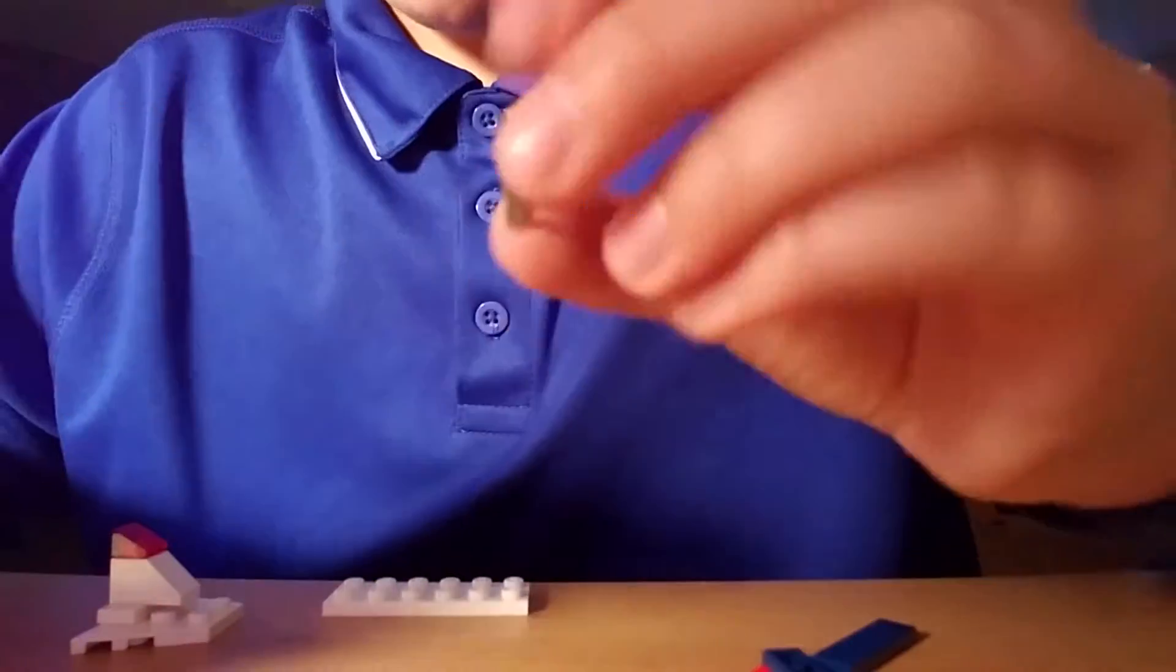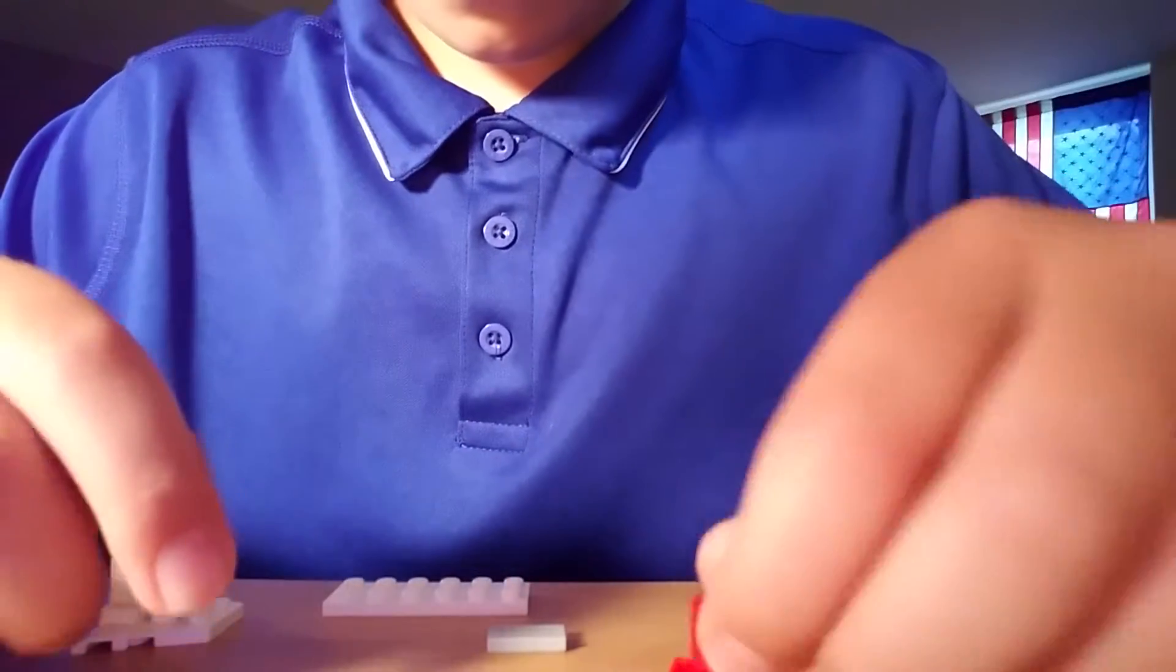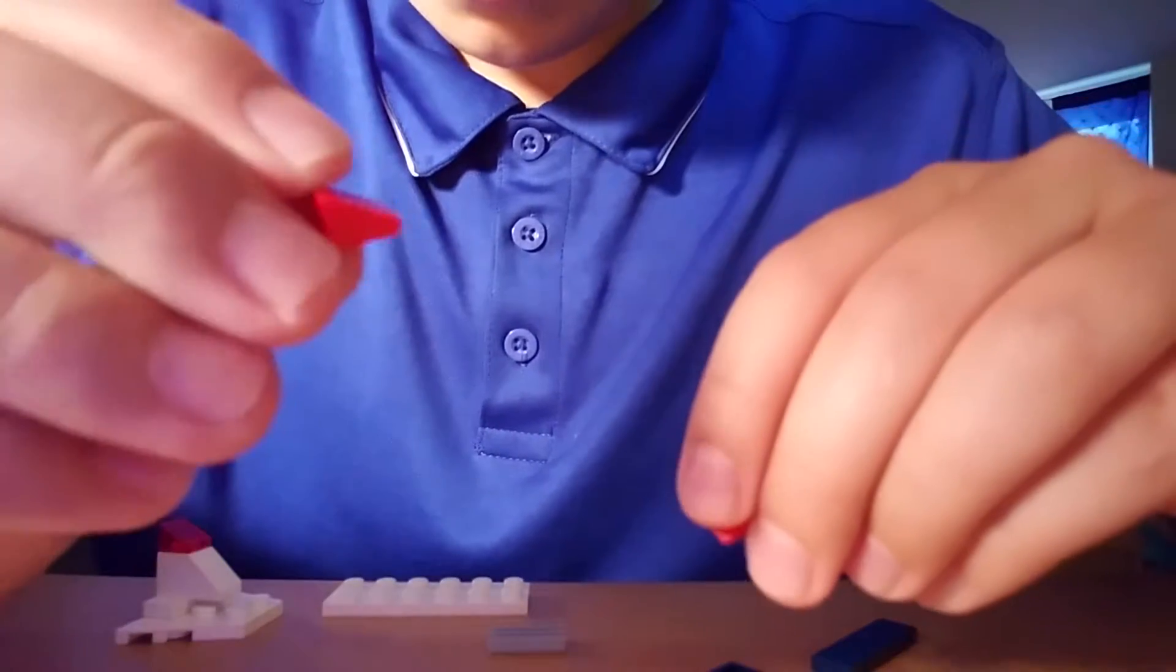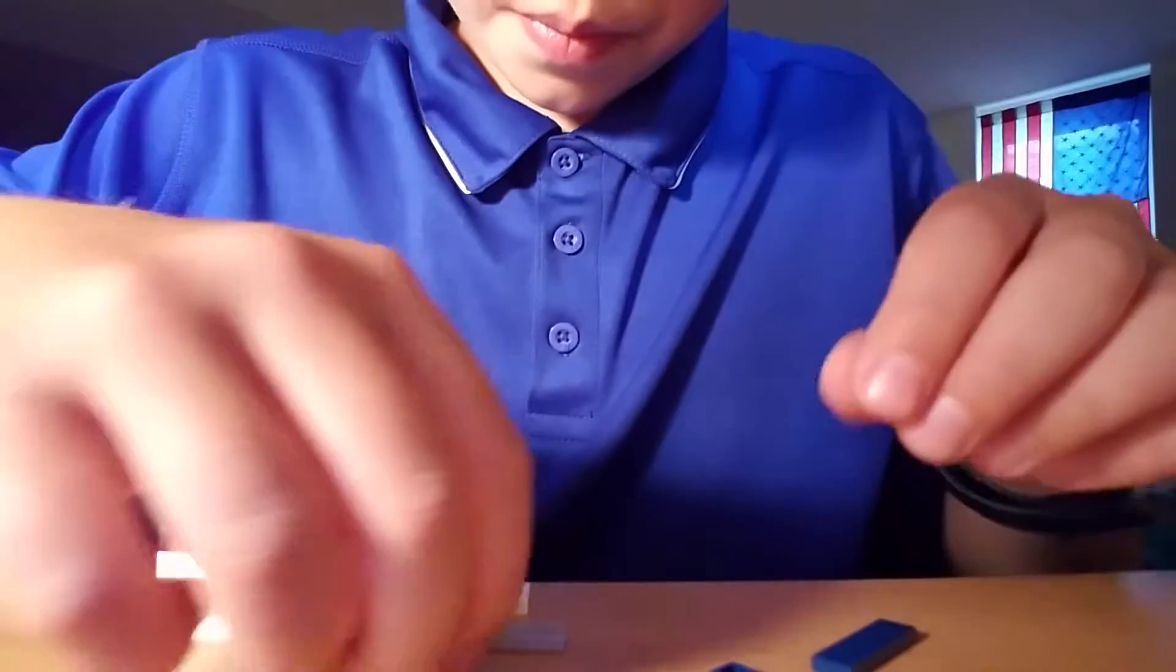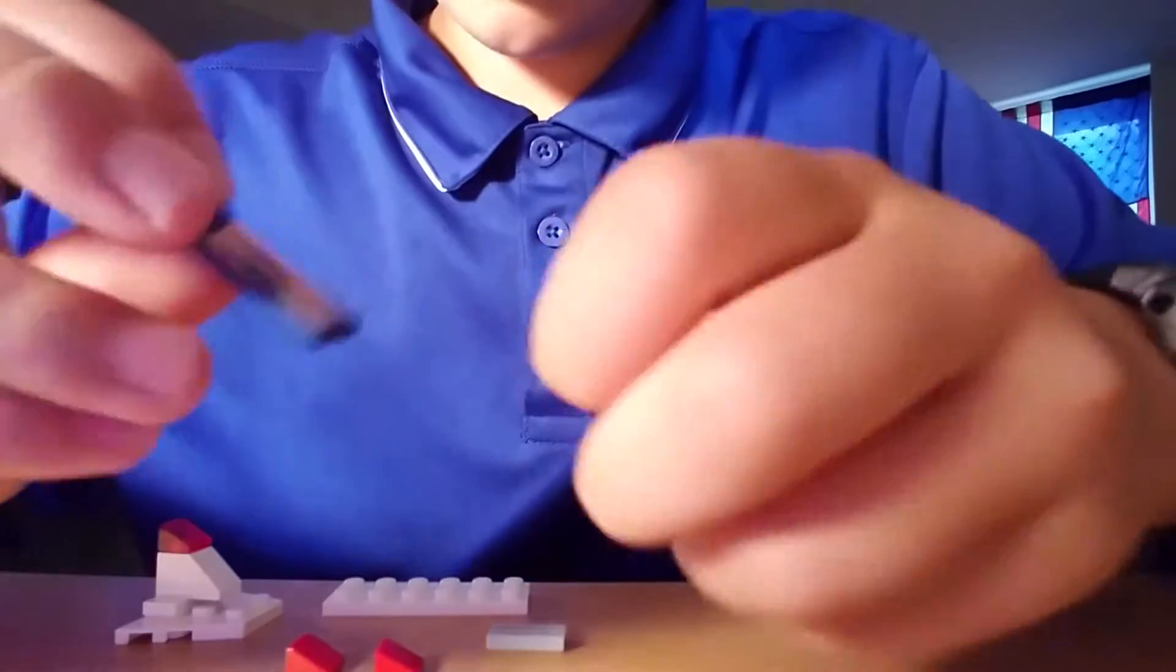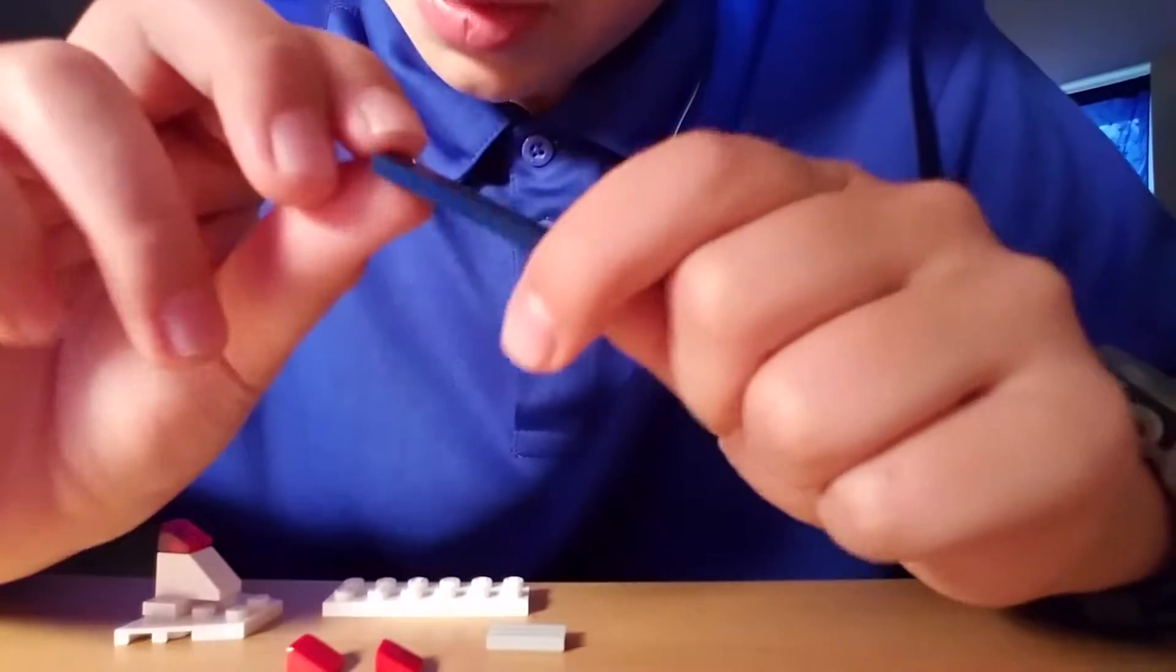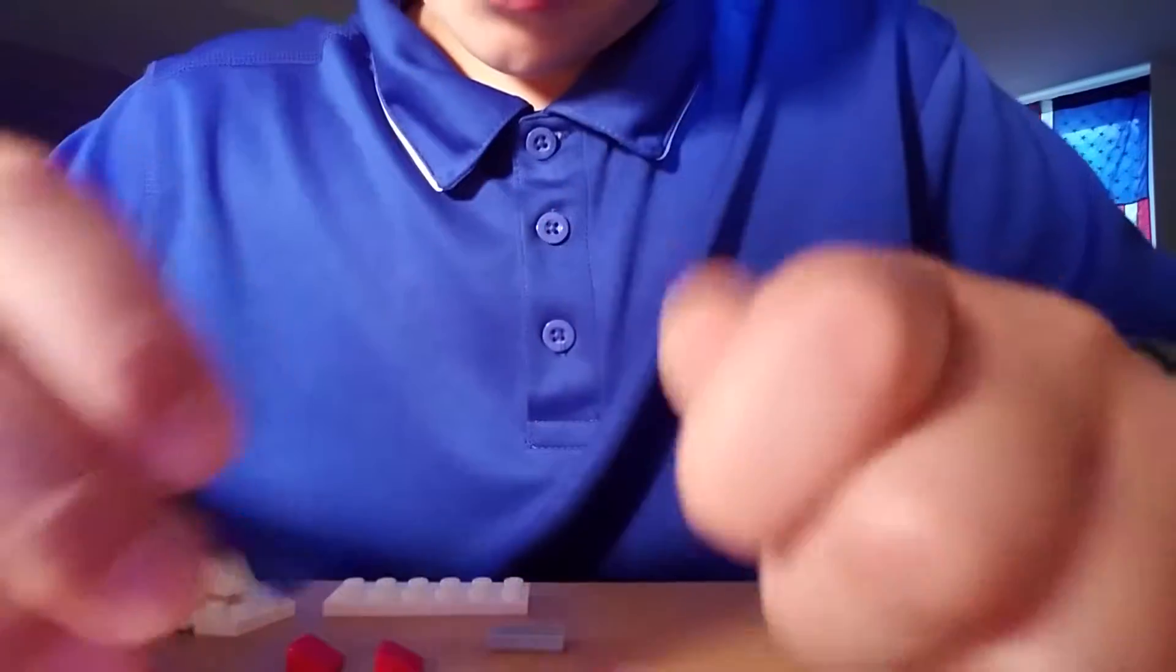Then, you're going to need one of these 1 by 2 rail pieces. Two 1 by 1 flat, non-see-through pieces. Then, you're going to need two 1 by 4 flat pieces. And, you're going to need two of them.